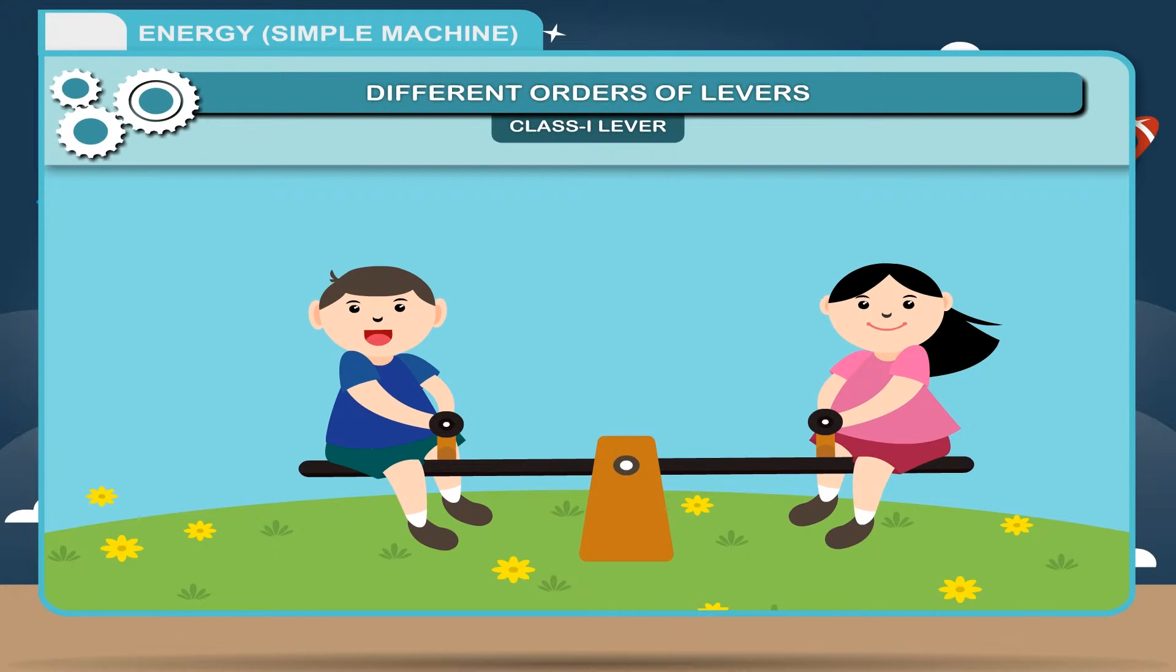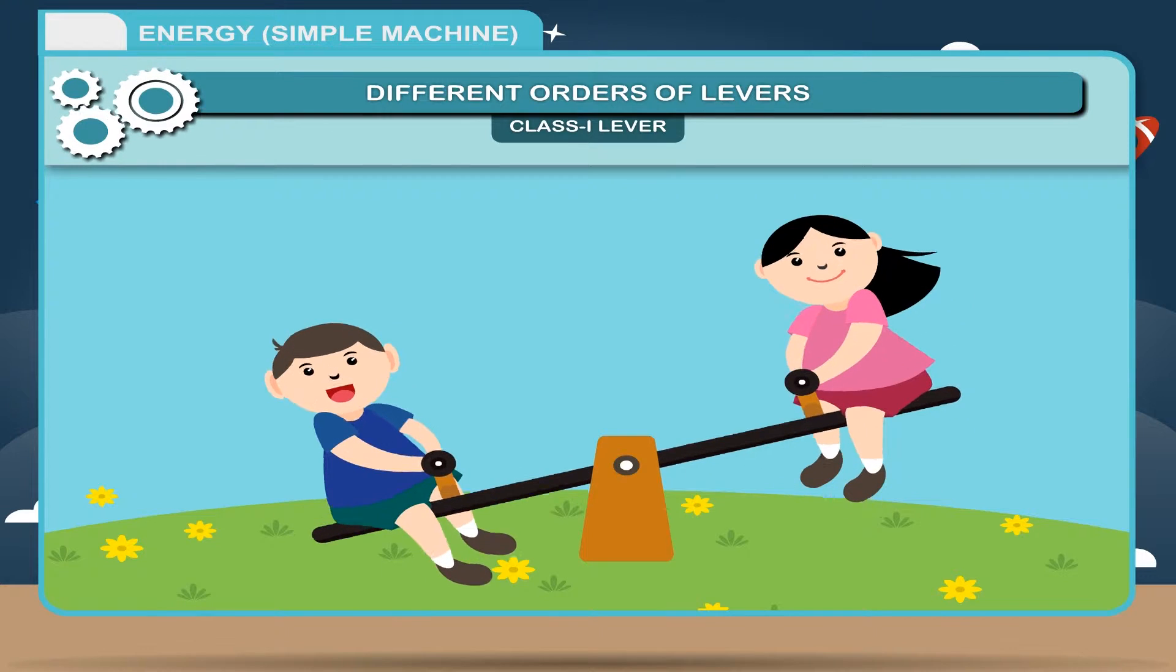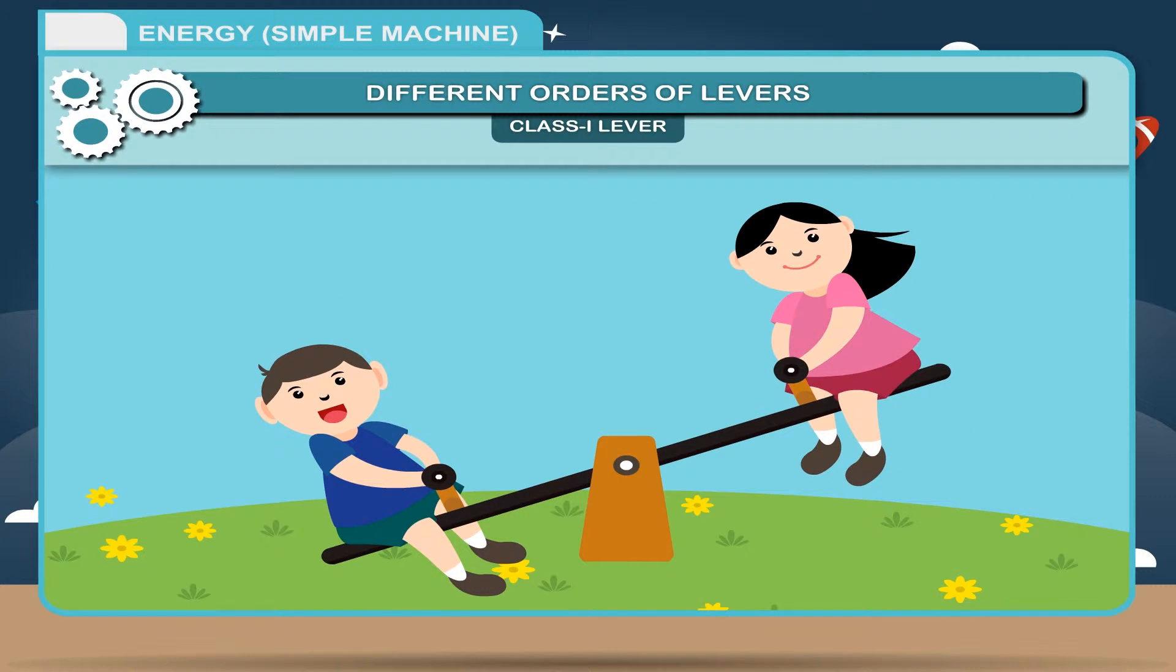Examples: A beam balance, a seesaw, a pair of scissors and pliers are the common examples of class 1 lever.